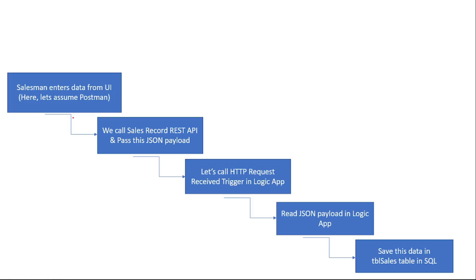The application flow is: first, the salesman enters data from the UI, then we call the REST API and pass the JSON as a payload in the request body. On the Logic App side, we have an HTTP request received trigger, and finally we read the JSON payload and save that data in SQL Server.